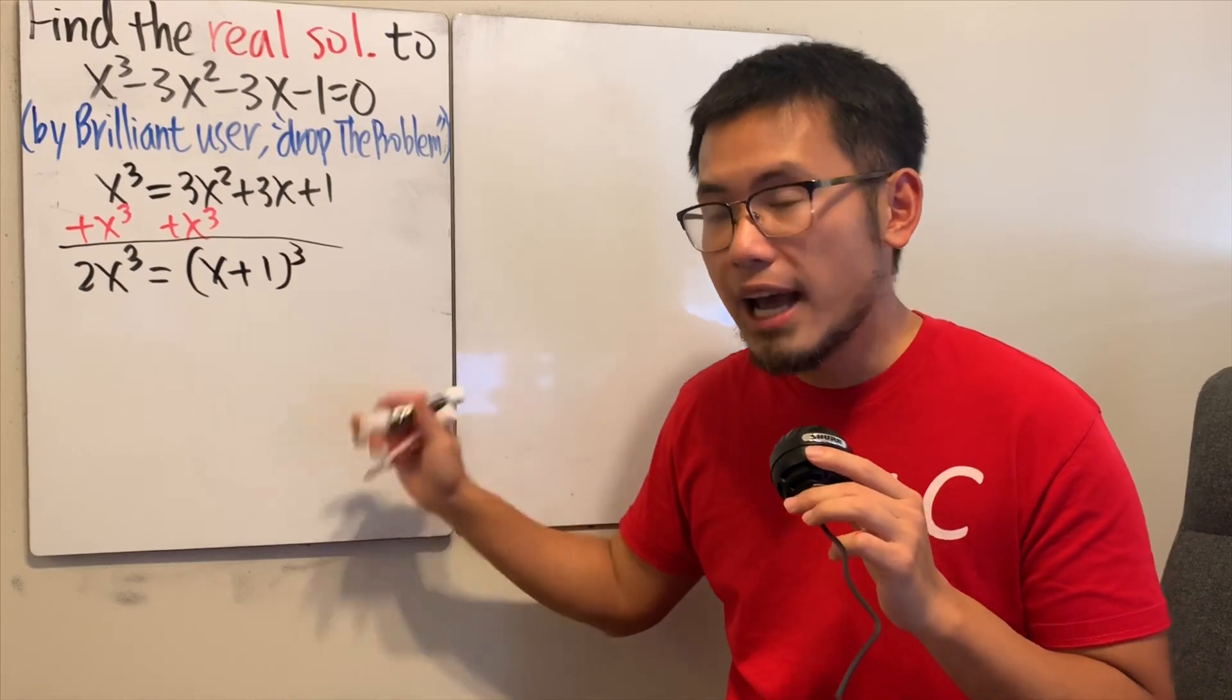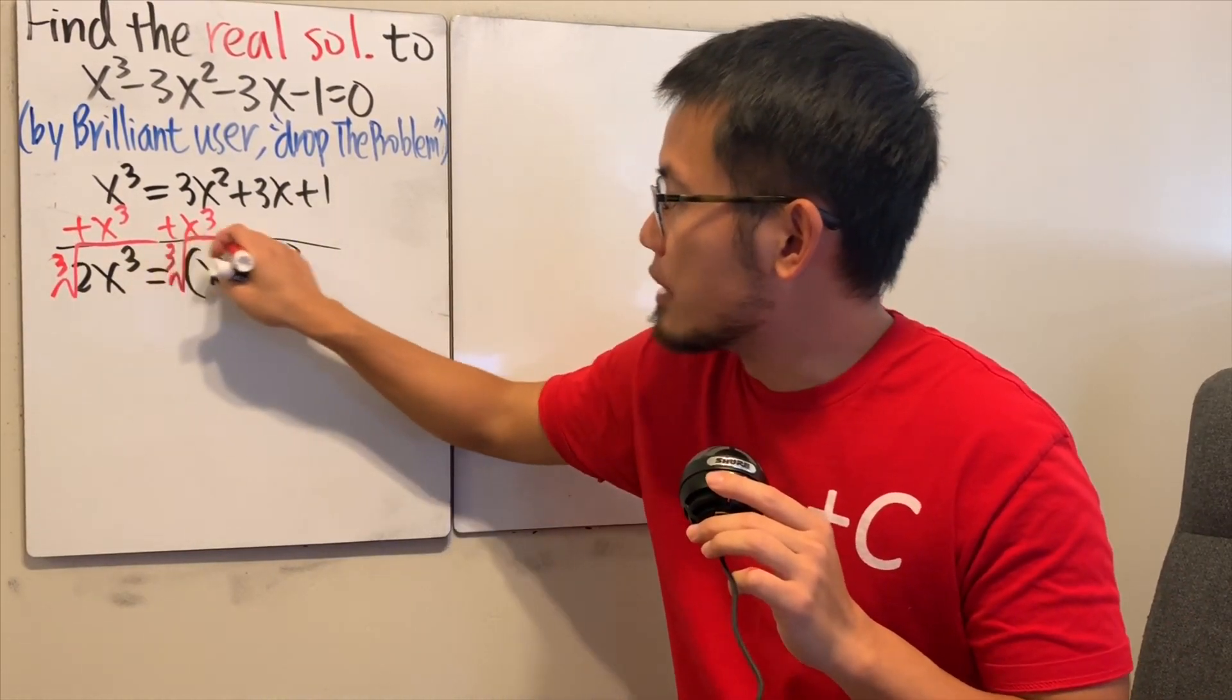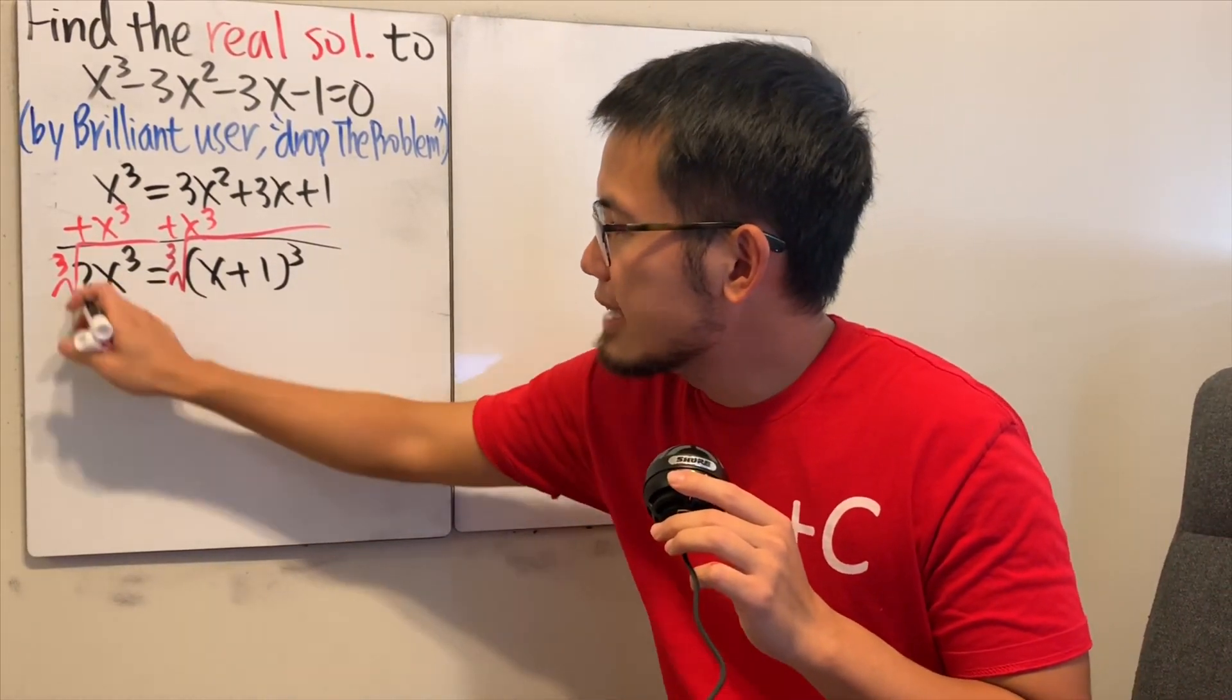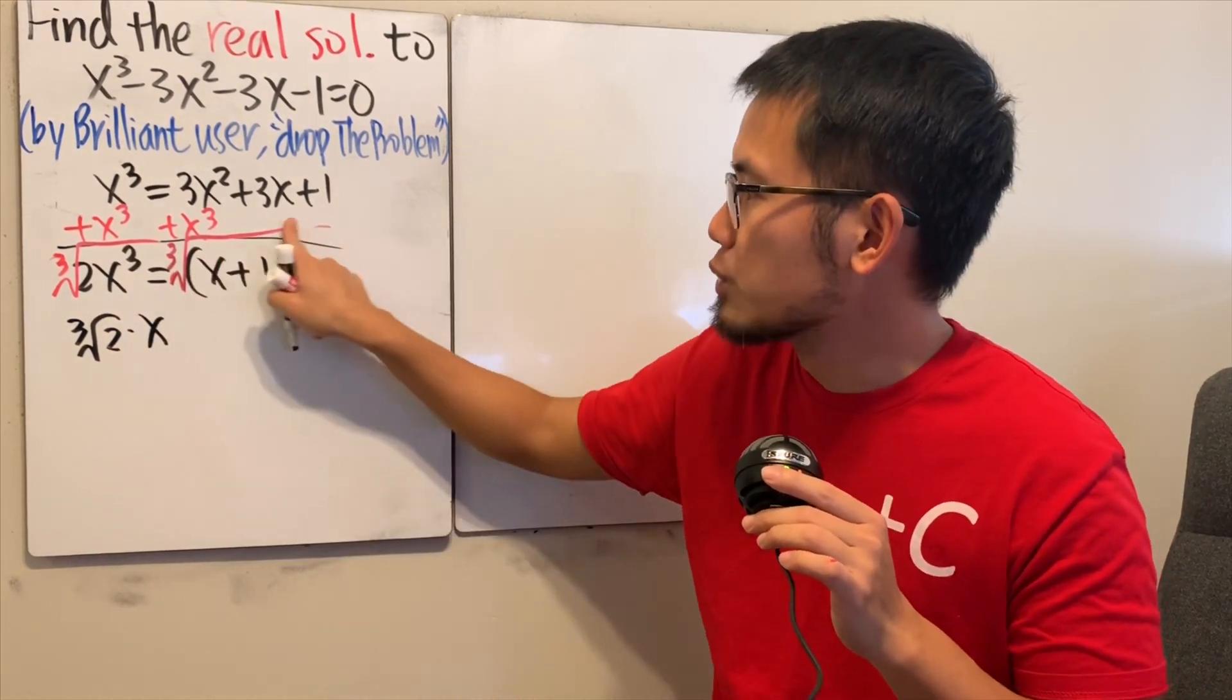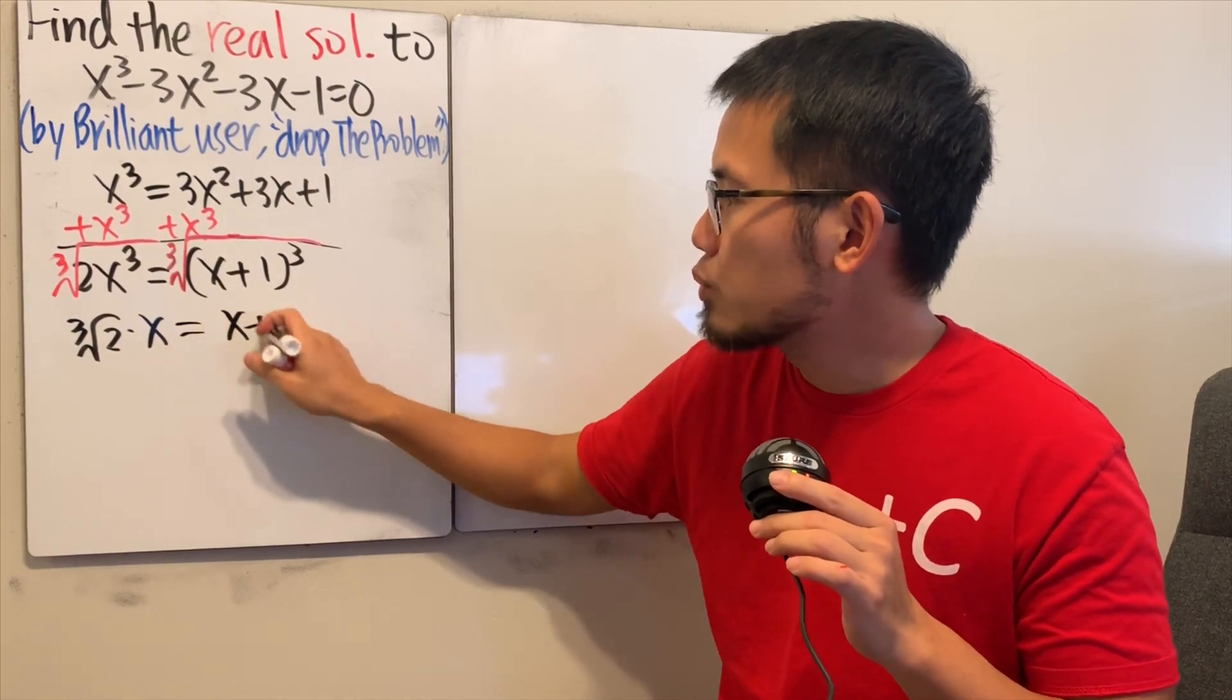And this is actually very nice, because after we take the cube root on both sides, this becomes just a linear situation. The left-hand side, we just get ∛2 · x. And the right-hand side, this and that will cancel. And we just get x + 1.